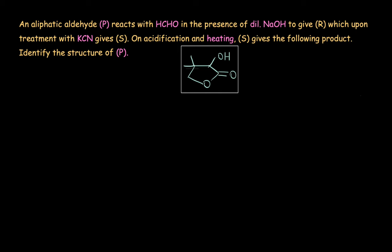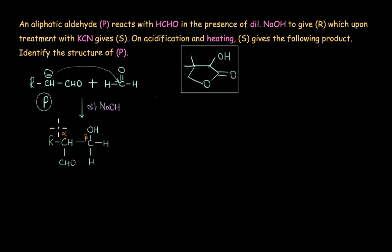So let's assume that the structure of our starting aldehyde P is R-CH2-CHO. Let's go ahead with this assumption. And formaldehyde of course doesn't have an alpha hydrogen atom. When these two aldehydes undergo crossed aldol condensation reaction, the product that we get is this. The enolate ion from P would attack the carbonyl carbon atom and result in the formation of a beta hydroxy aldehyde nothing but aldol. So this is the alpha carbon atom and we have OH group at the beta carbon atom.